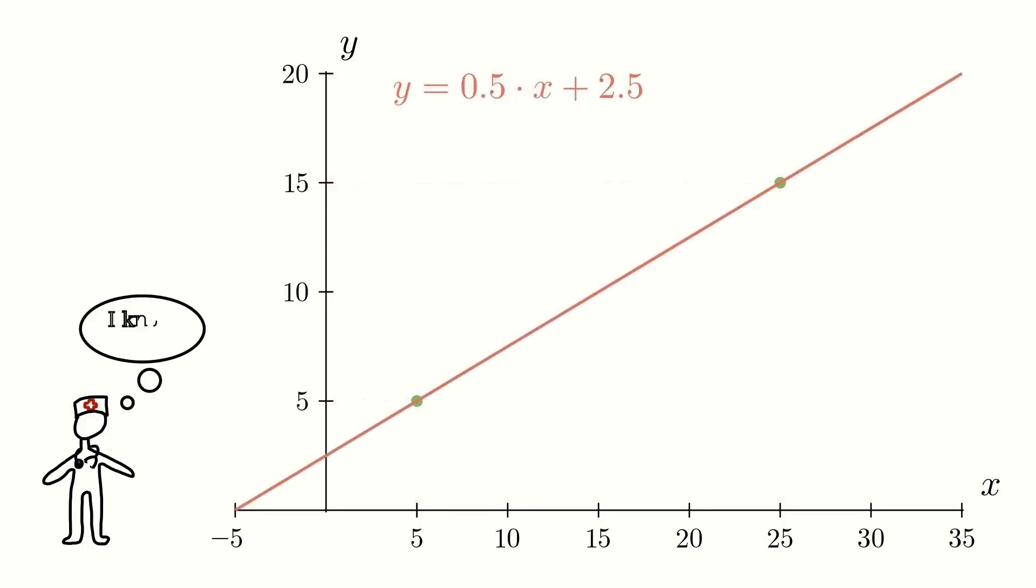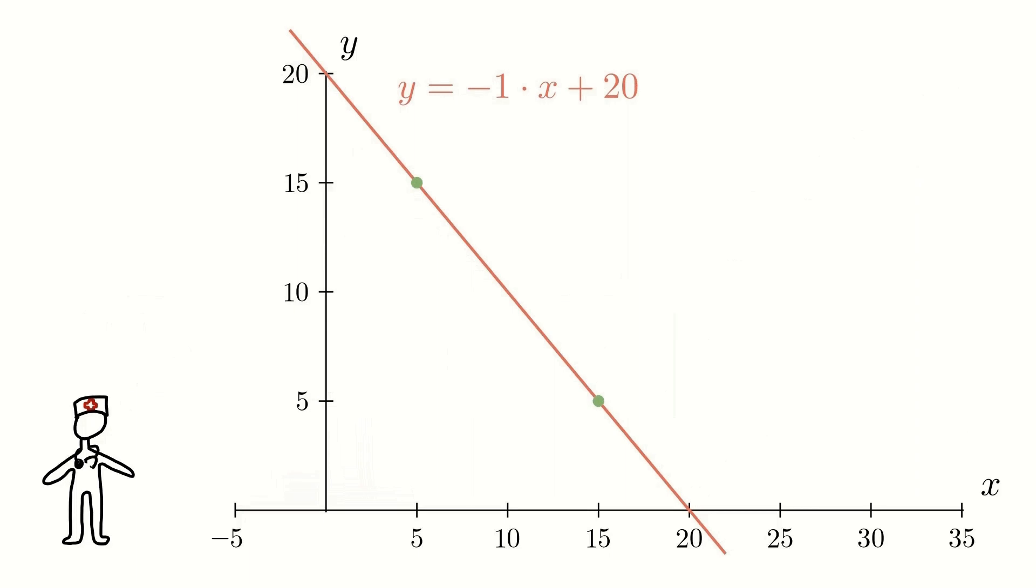For this line k equals 0.5 and m equals 2.5. Whereas for this line k equals minus 1 and m equals 20. Just drawing straight lines with different k and m values can be interesting but it doesn't really help us solve real world problems.